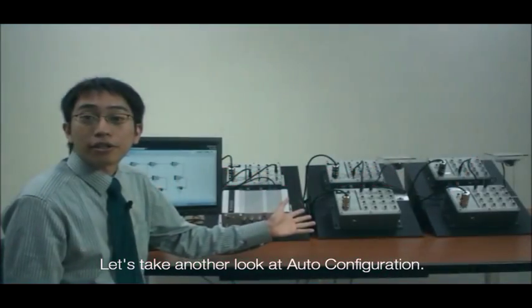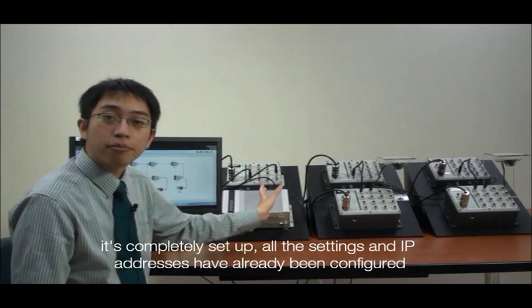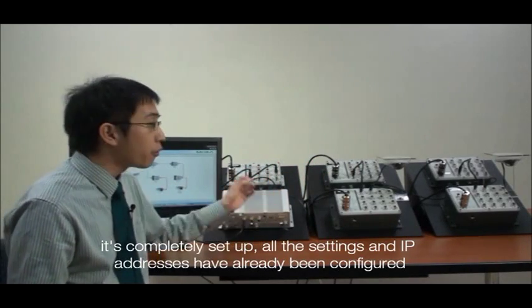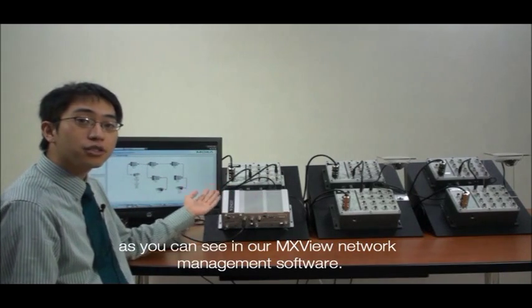Let's take another look at auto configuration. Here, we've got our train system. It's completely set up, all the settings and IP addresses have already been configured and it's working properly, as you can see in our MXView network management software.